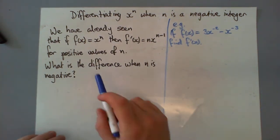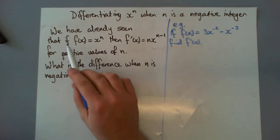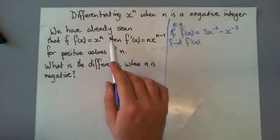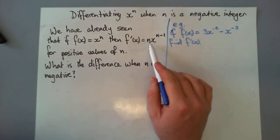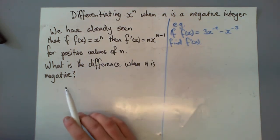Hey, in this video we're going to have a look at differentiating x to the power n where n is a negative integer. So we've already seen that f of x equals x to the n, that f dash of x equals n x to the n minus 1. And this is being for positive values of n. So what's the difference when n is negative?